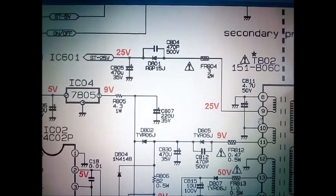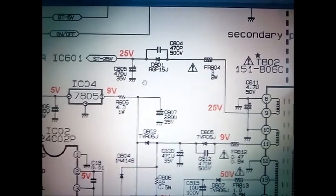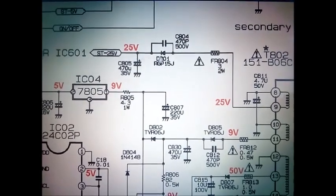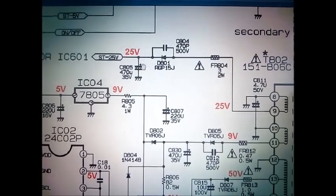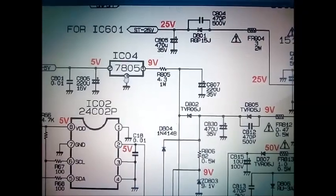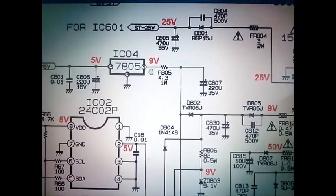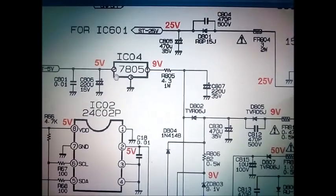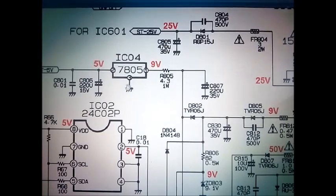Pin number 13 is 50 volts. This 25 volts pin number 9 goes to diode D801. The diode output is 25 volts and IC409, 5 volts regulator.